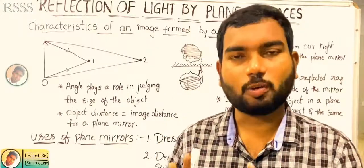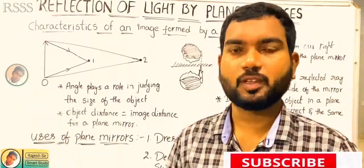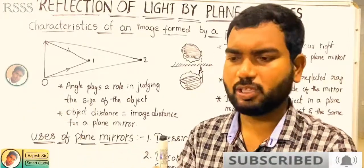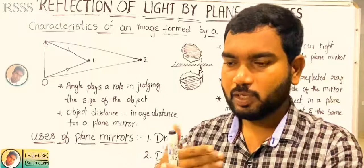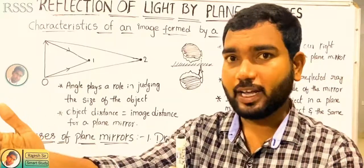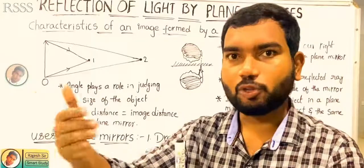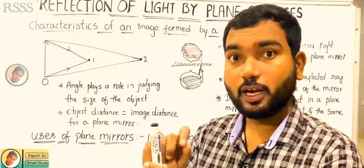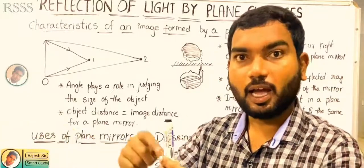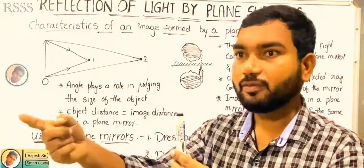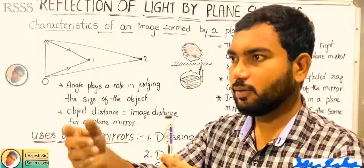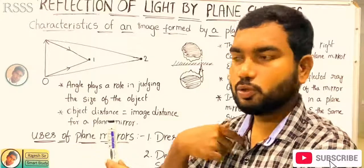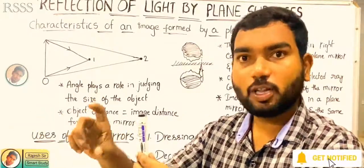Here are all the characteristics of the image. Let me show an object — this is a pen, a marker, whatever it is. This is an object. I have a plane mirror. I have a marker in front of this plane mirror. I am an observer observing this pen in front of the mirror. Think of it like that.